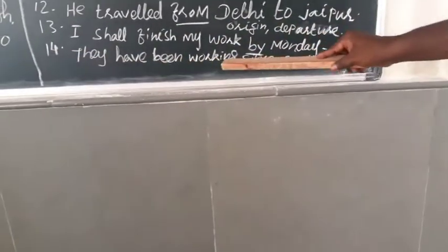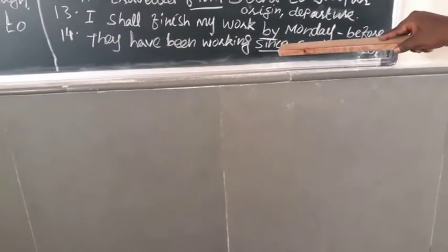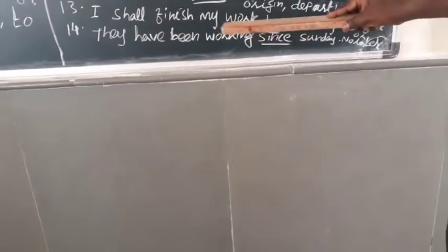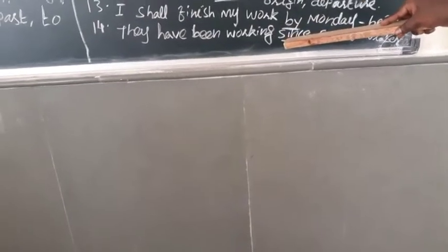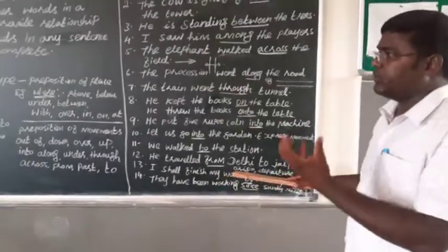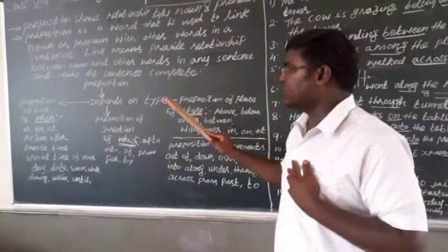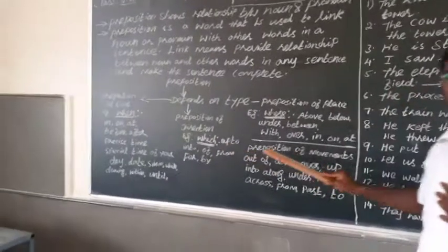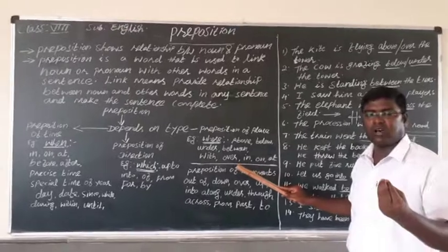Next. They have been working since Sunday. Since. When you use the word since means from that moment onwards, showing the period of duration. This also showing the duration. So, the thing, the prepositions are used depending on the three types. That is, prepositions of place, prepositions of time, prepositions of direction, and then prepositions of movement. So, accordingly, the prepositions are placed.